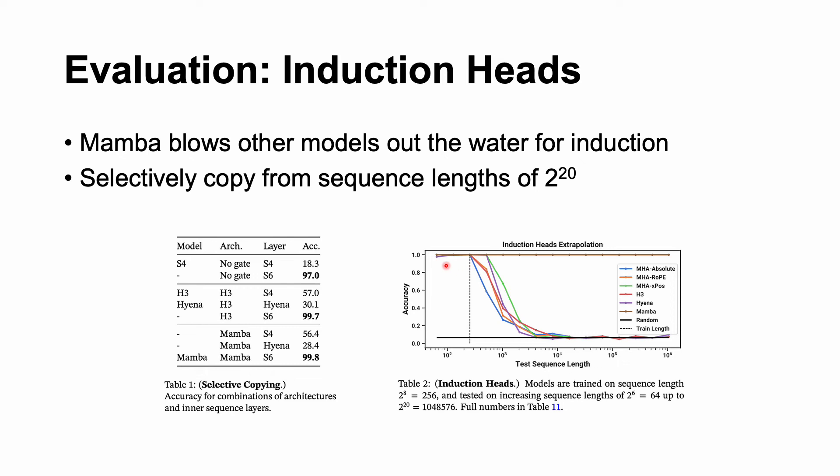Also, you can see this here. Mamba is the very top bar, even up to test sequence lengths of 10 to the power of 6, which is roughly a million.